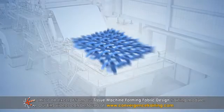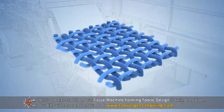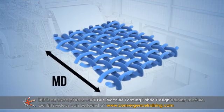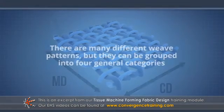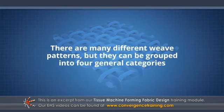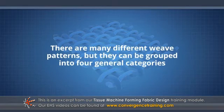Fabrics are formed by weaving together yarns oriented in the machine direction, MD, and cross direction, CD. There are many different weave patterns, but they can be grouped into four general categories or styles based on the number of CD yarn layers.